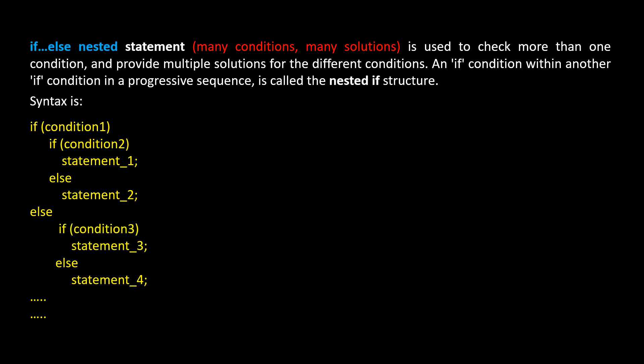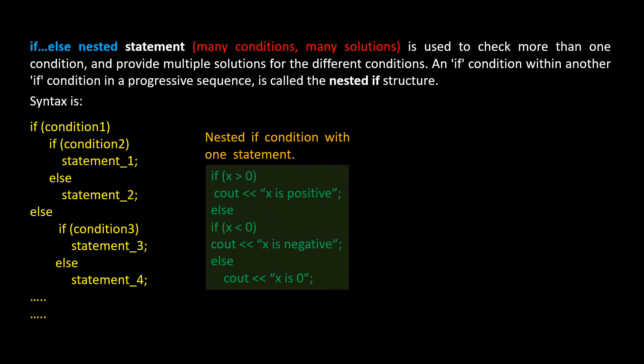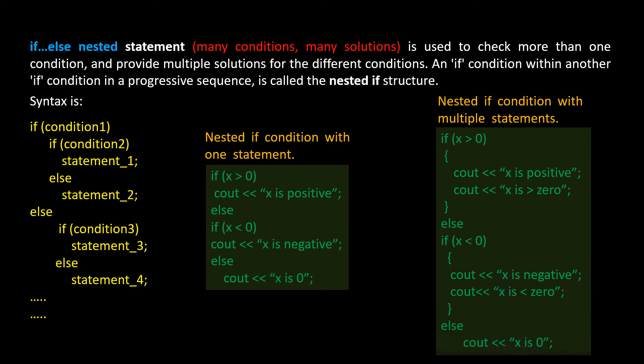Now let's look at an example for a nested if condition with one statement solution. Here it says: if x is greater than zero, then print 'x is positive'; else if x is less than zero, cout 'x is negative'; else cout 'x is zero'. These are one-line statements. In this next example, we take a look at the nested if condition with multiple statement solutions. Note that for the condition 'if x greater than zero,' there are two cout statements that will be executed. Similarly, there are two print statements for the condition 'if x less than zero'.